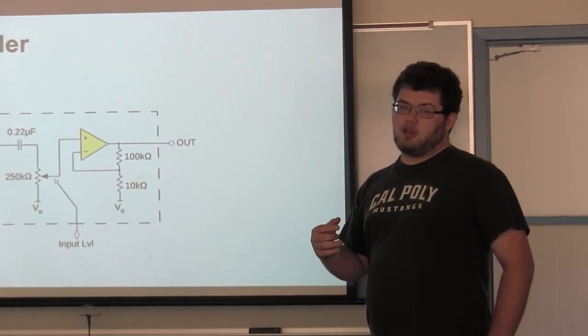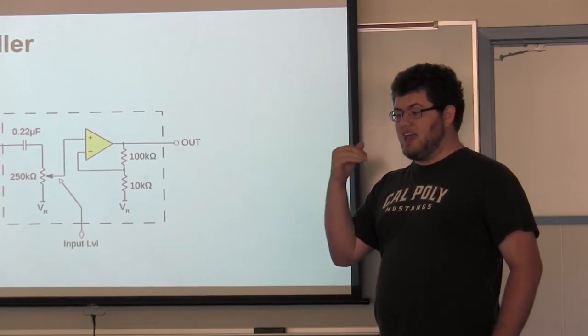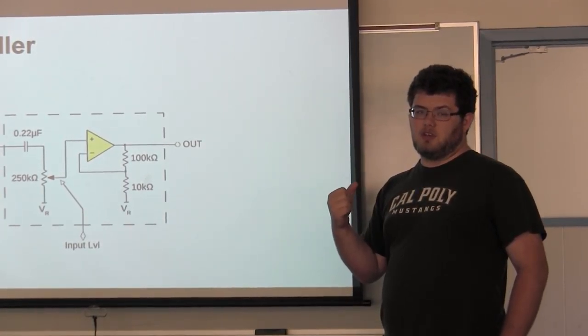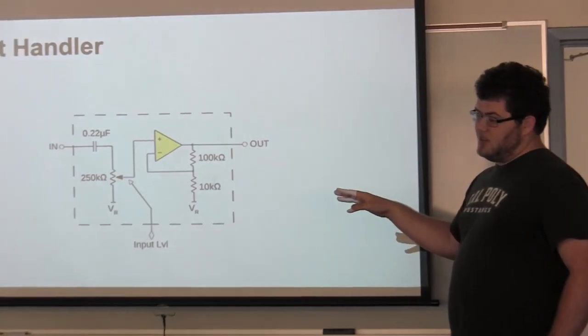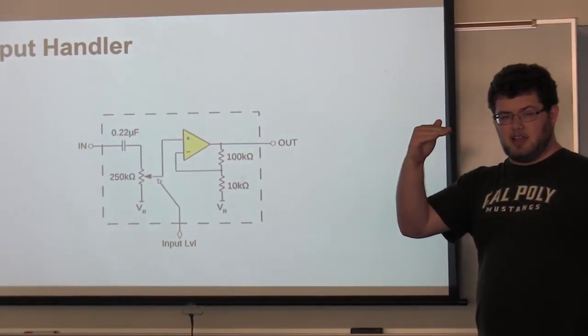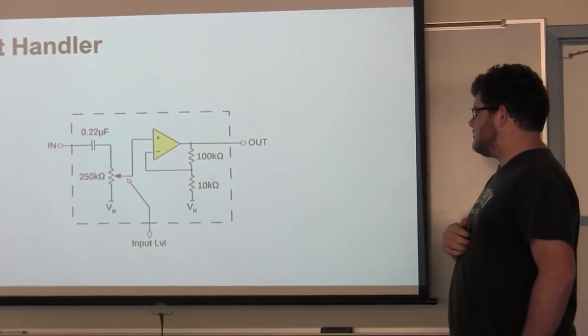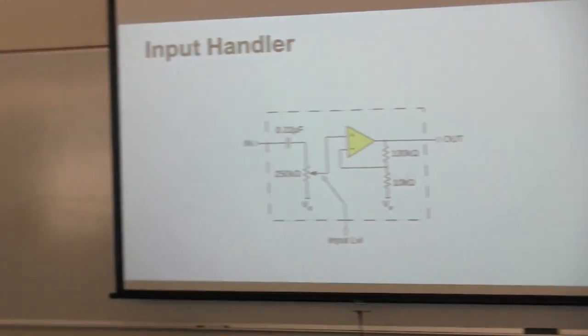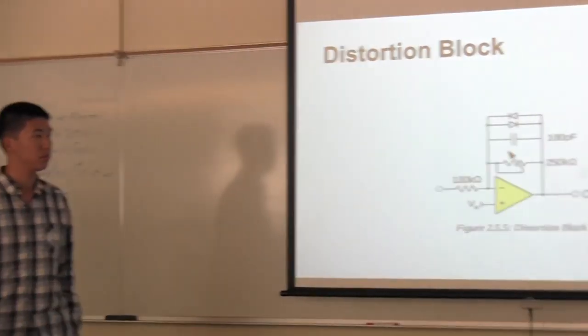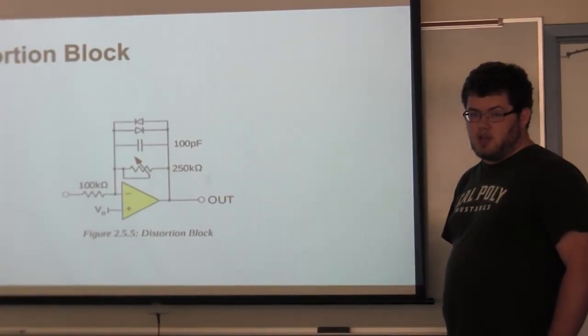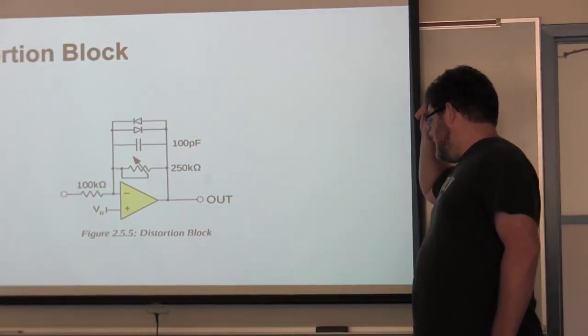It also DC biases the audio signal to negative 4.5 volts, and the rest of the circuit runs from 0 volt ground and a negative 9 volt supply voltage. So this biases the audio signal to right in the middle of that so it can be amplified or clipped.